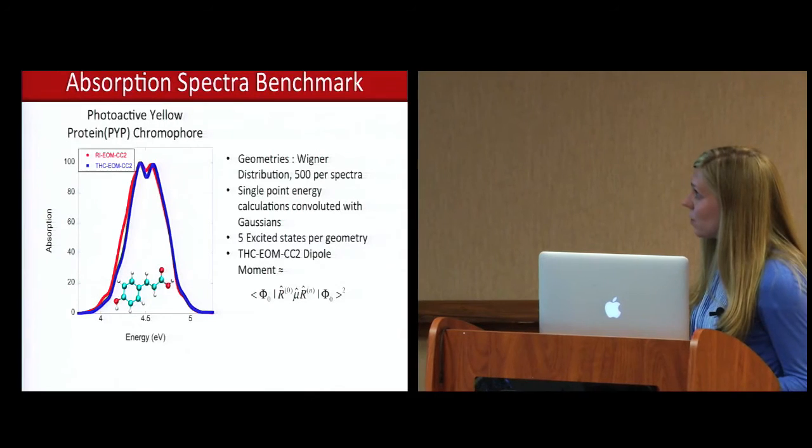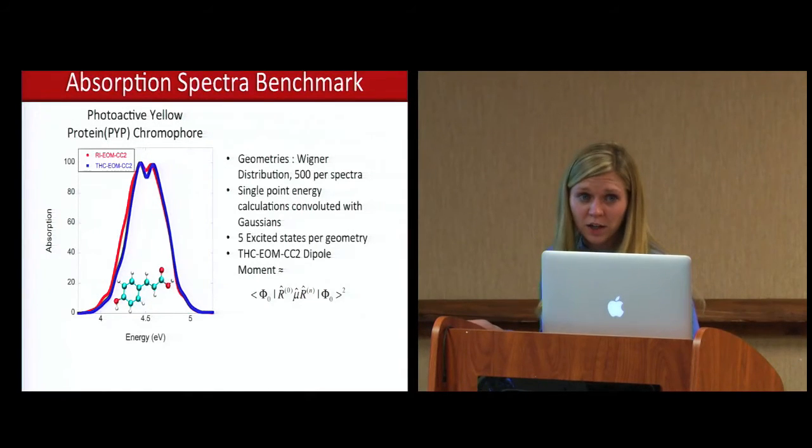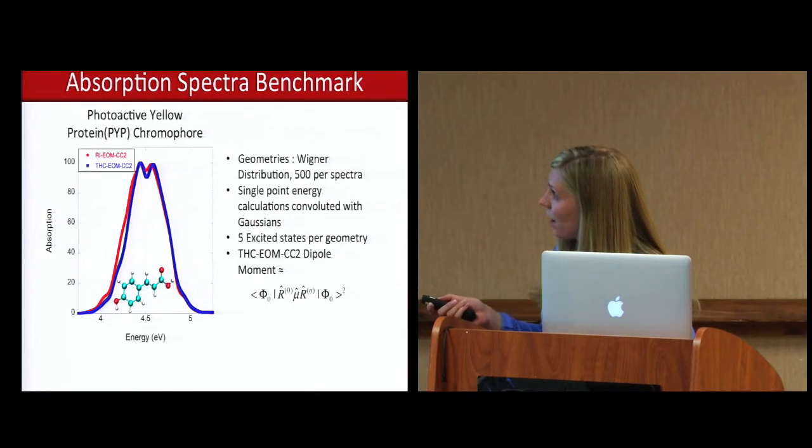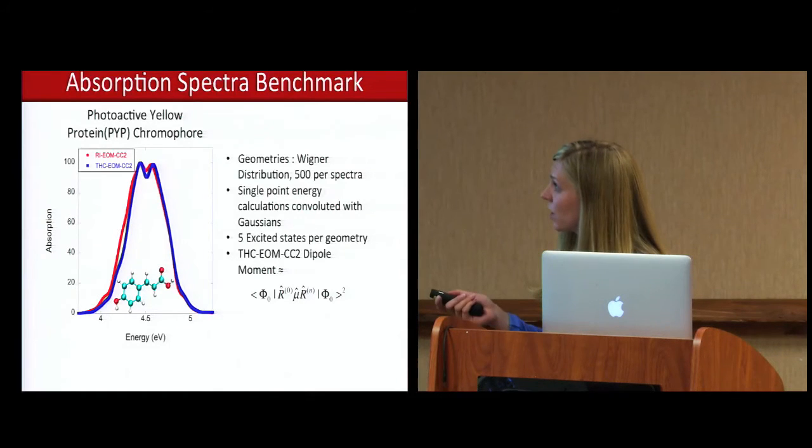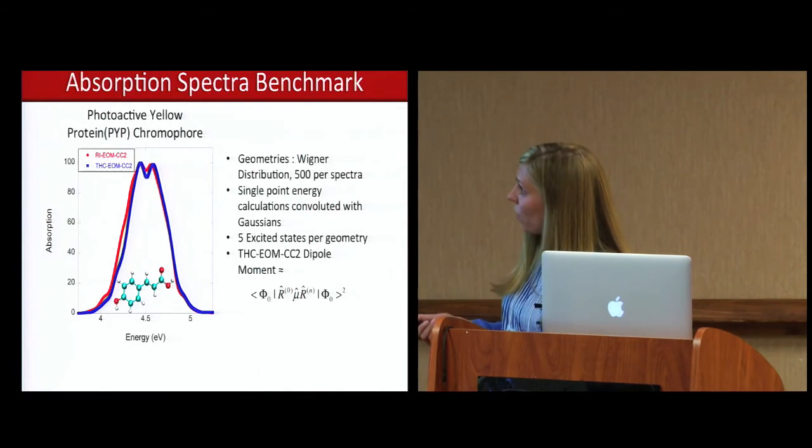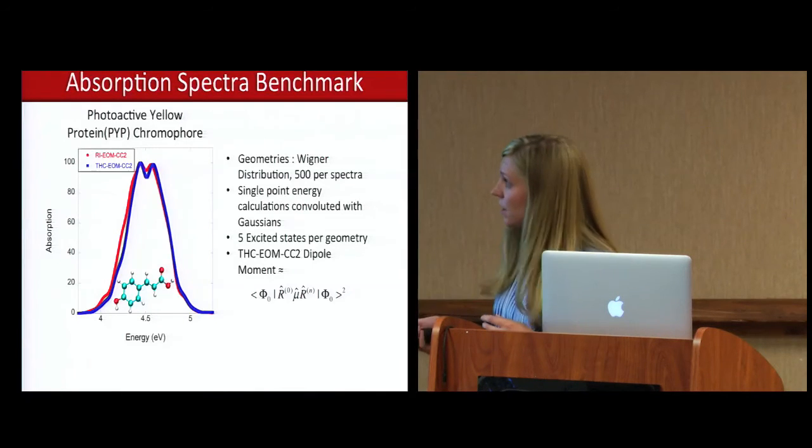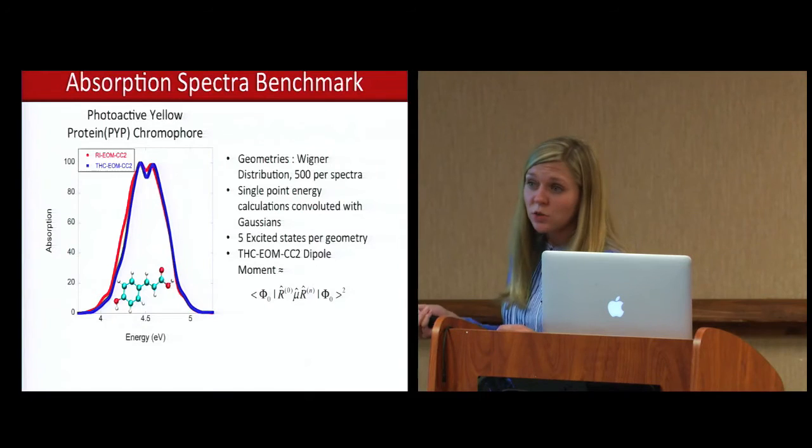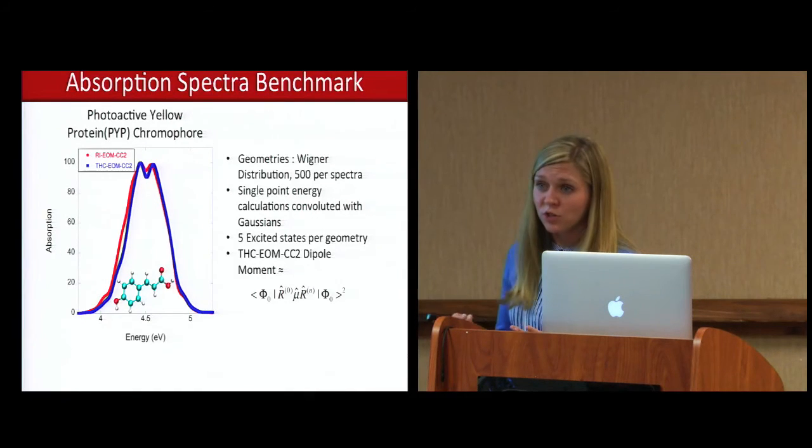And so now I'd like to go back to the photoactive yellow protein. Here I'm showing just the chromophore of the protein, and I'm comparing it to the method EOMCC2, which is our benchmark for what the difference is when we include this tensor hypercontraction approximation relative to the standard way of doing that calculation, which does scale as N to the fifth. And so for this absorption spectra, I'm looking at 500 different geometries and the excited states calculated for those geometries. And we see that we do get nice agreement with the typical way of doing this approach for excited states.